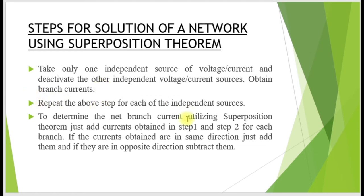Repeat the above step for each of the independent sources. You can take any source first, either current or voltage, but you must deactivate all other independent sources. Then determine the net branch current using superposition theorem by adding the currents obtained in each step for each branch. If the currents are in the same direction, add them; if they are in opposite directions, subtract them.